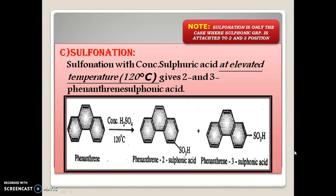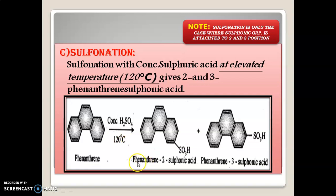Sulfonation is a very important reaction. Sulfonation with concentrated sulfuric acid at elevated temperature of 120°C gives a mixture of phenanthrene-2-sulfonic acid and phenanthrene-3-sulfonic acid — it is a mixture, not a single compound. You must be wondering why the reaction takes place at the second and third positions. Yes, sulfonation is an exception where the reaction takes place at the 2nd and 3rd positions, and the sulfonic group is attached at those positions.